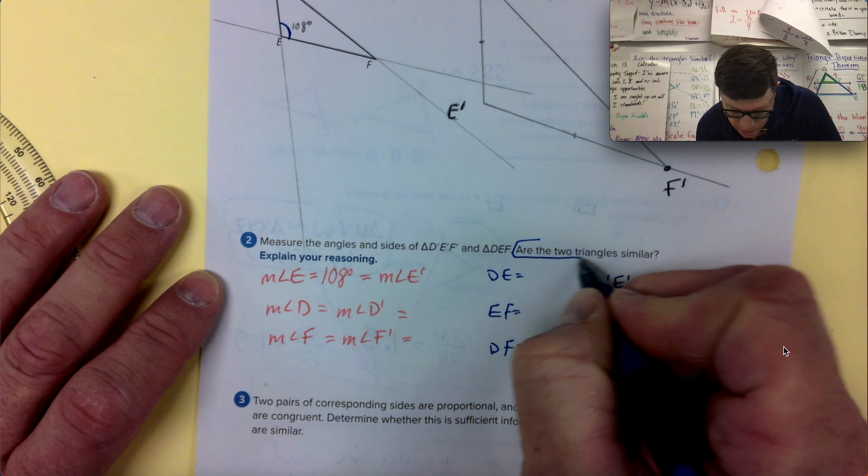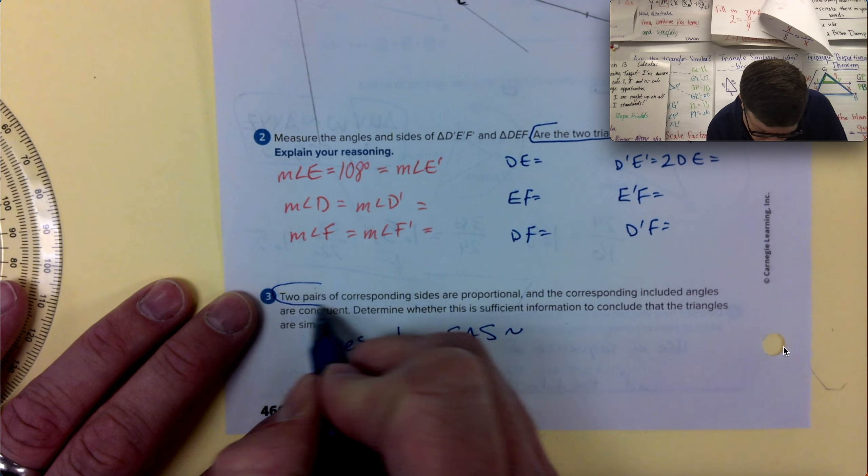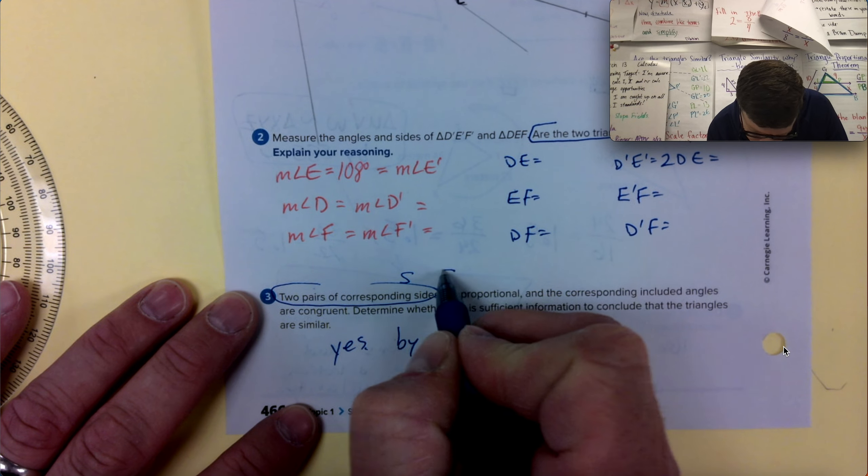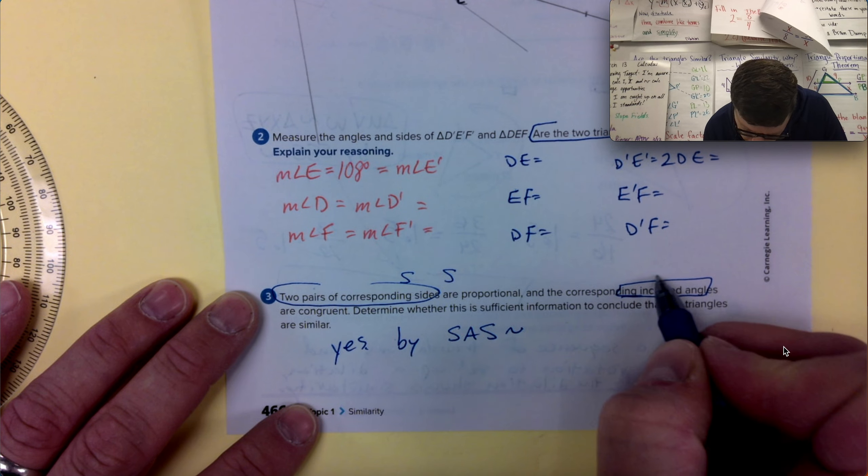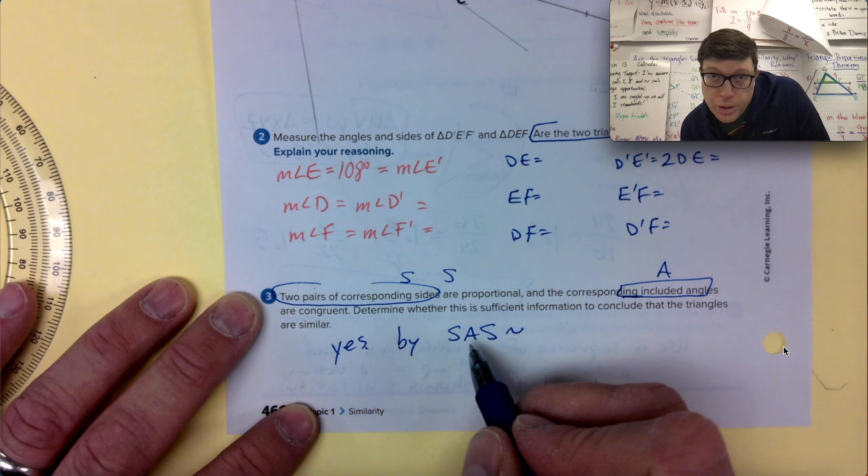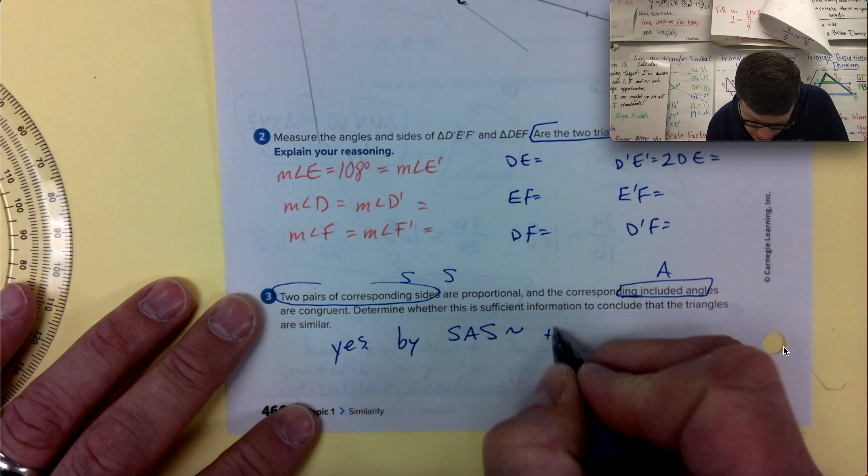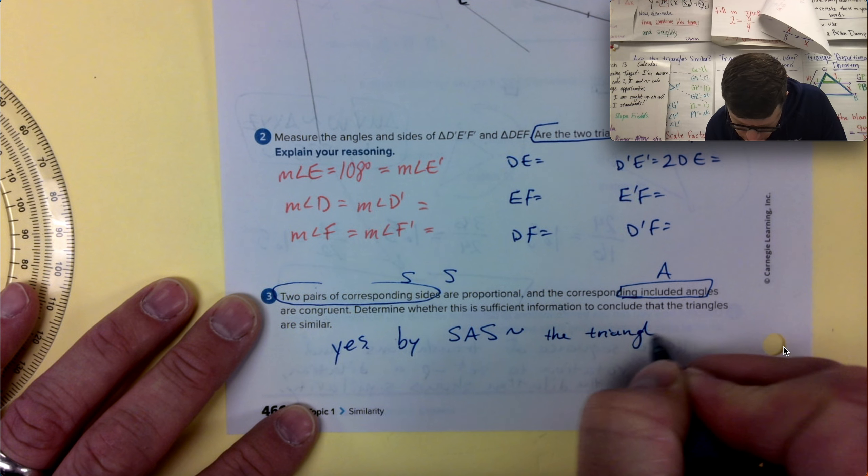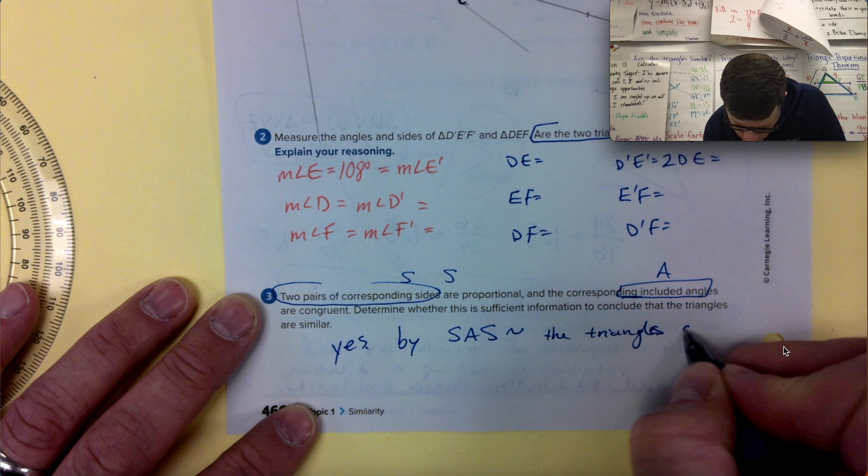Two pairs of corresponding sides are proportional and the corresponding included angles are congruent. Determine whether this is sufficient information to conclude the triangles are similar. Yes. By side angle side similarity. So two pairs of corresponding sides, that's the S S, and the corresponding included angle, that's the A, included in the middle. The triangles are similar.